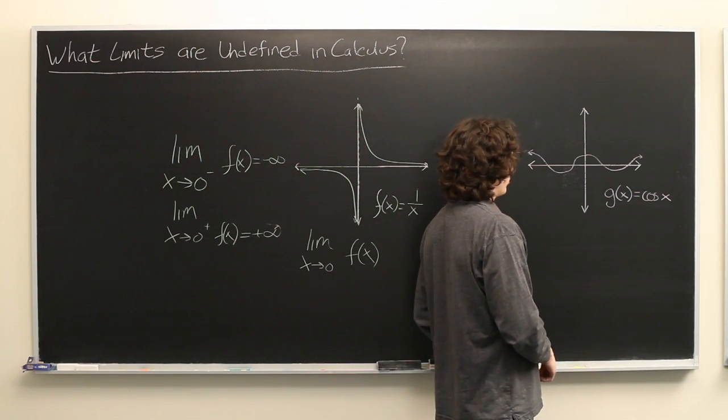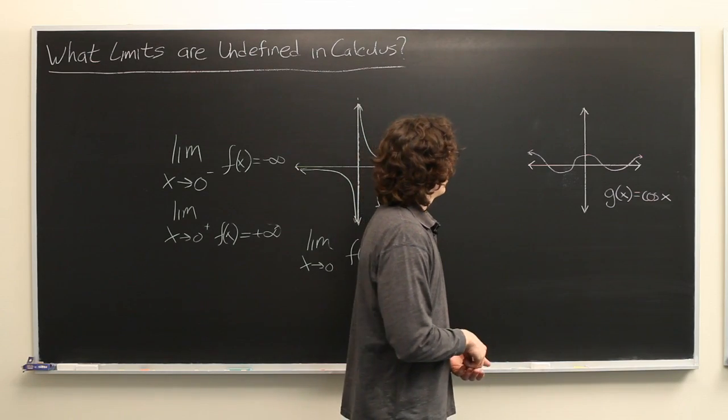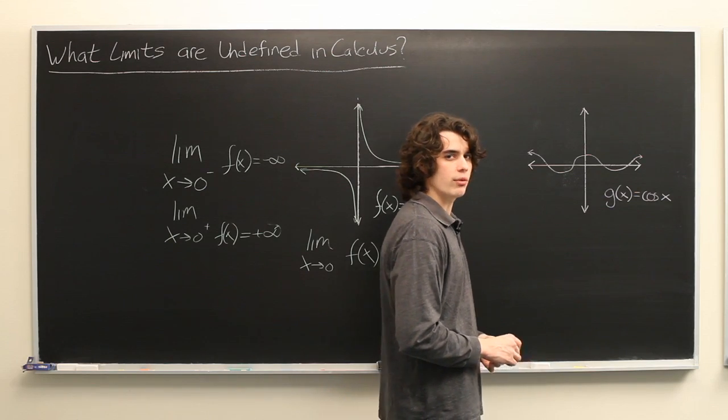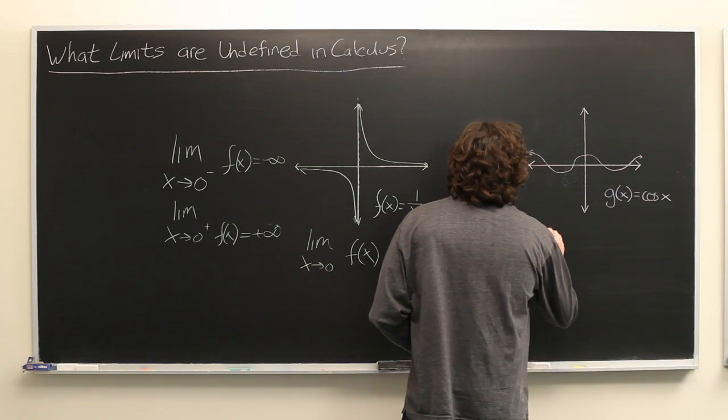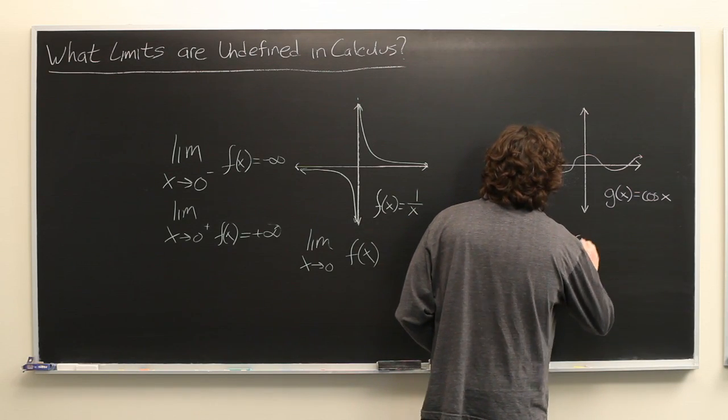The second example we have trigonometric function cosine. Now we can take the limit at any point in the domain. But what happens if we try to compute the limit as x goes to infinity of g of x?